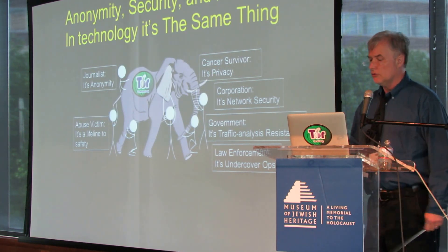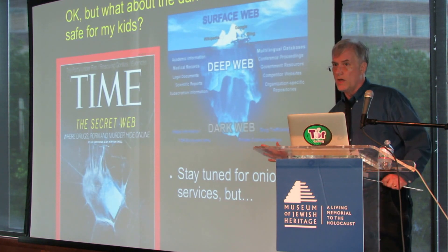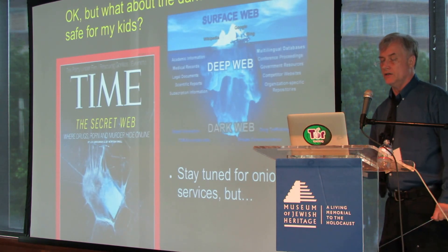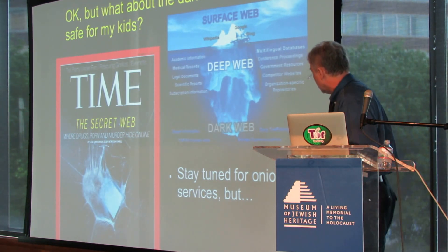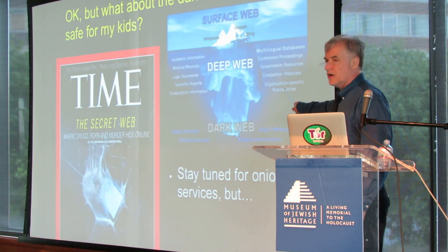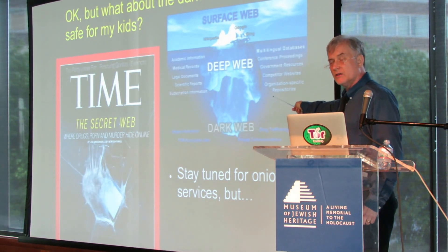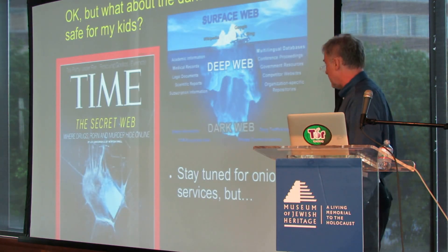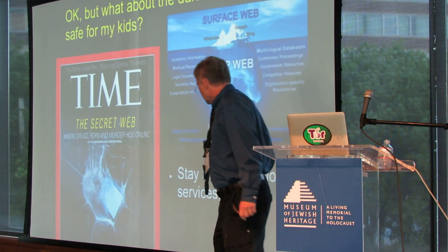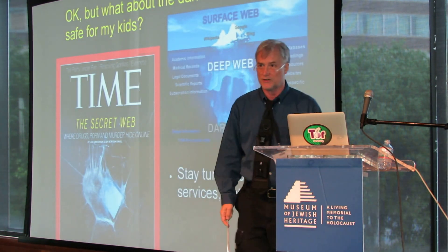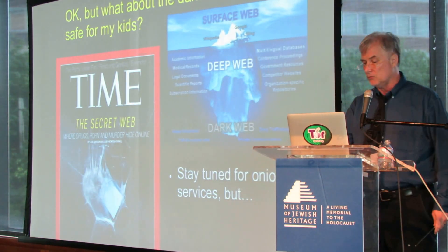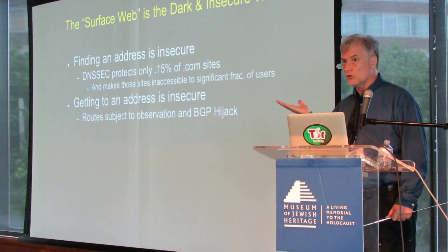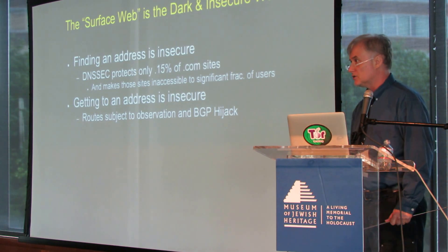So, okay, that's Tor — but aren't we here to talk about the dark web? I'll come to the .onion stuff in a bit. There's that familiar iceberg image, and right down in the deep dark area it says 'Tor encrypted services.' But I want to underscore something people often miss, which is that the regular surface web is actually the dark and insecure web. I say this for a couple of reasons. First, finding an address — finding out where to go — is itself typically insecure.